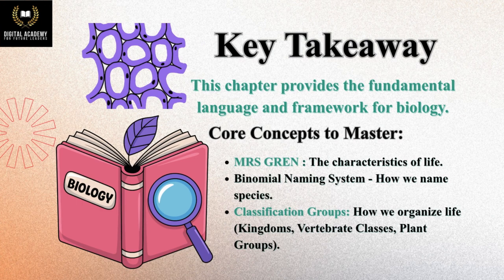Key takeaway: this chapter provides the fundamental language and framework for biology. Core concepts to master: the characteristics of life; the binomial naming system – how we name species; classification groups – how we organise life into kingdoms, vertebrate classes, and plant groups.